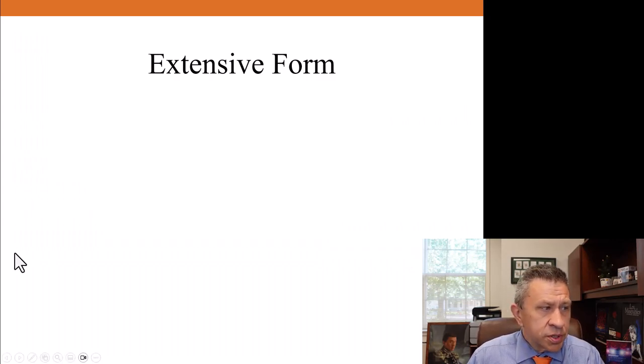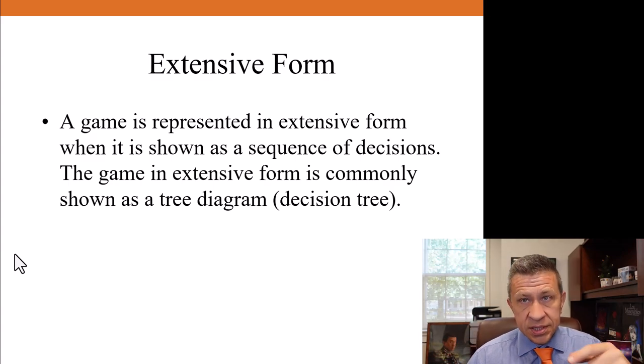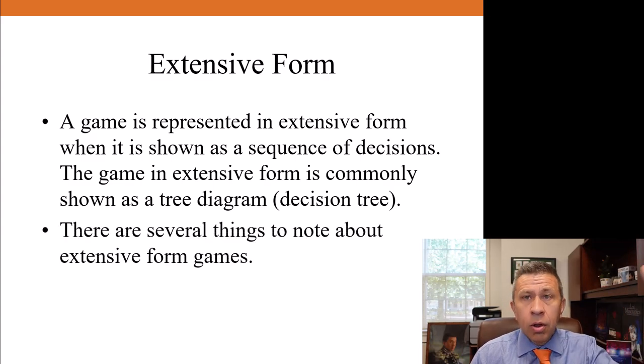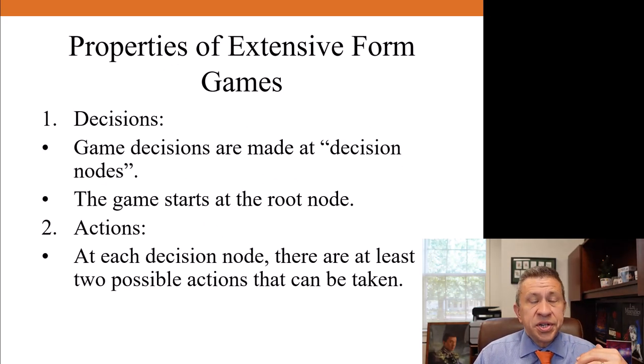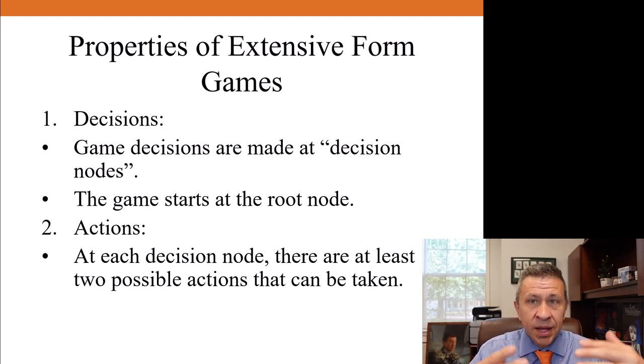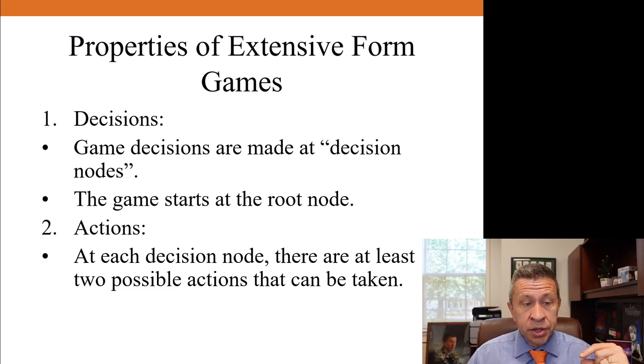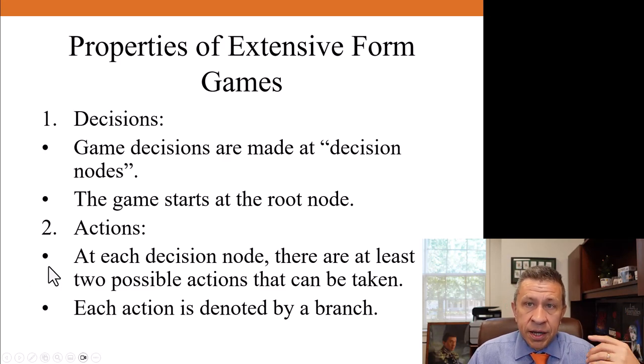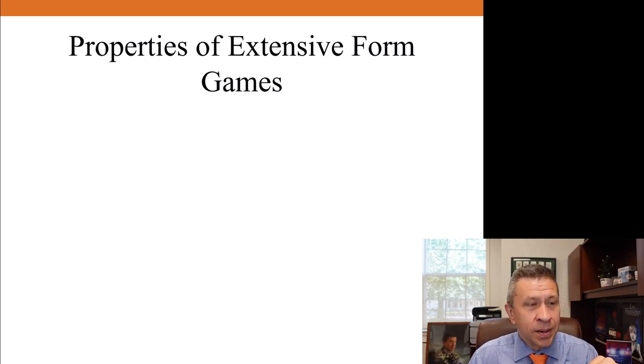Sequential games are usually represented in what we call extensive form. Extensive form is a tree diagram or decision tree, and it shows the sequence of events that are happening. There are a whole bunch of things we're going to note about tree diagrams and extensive form games that we need to understand as we move along. First, the decisions are made at what we call decision nodes. At each decision node, there's a possible action, and there has to be at least two actions that can be taken. If there's only one action, it's not really much of a decision. There has to be at least two, but there could be more than two actions that could be taken by a particular player in the game. Each action is denoted by a branch. Tree diagram, branches of the tree diagram. Very clever, of course.